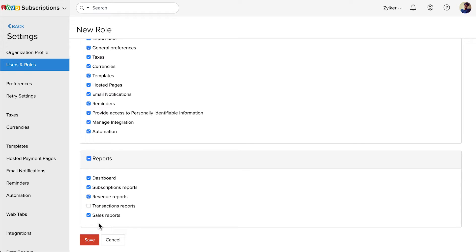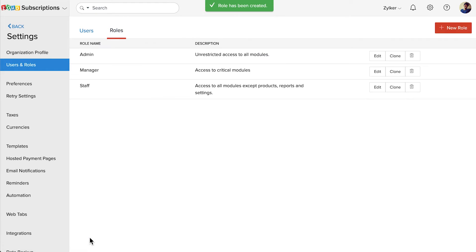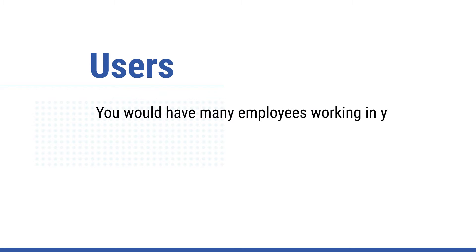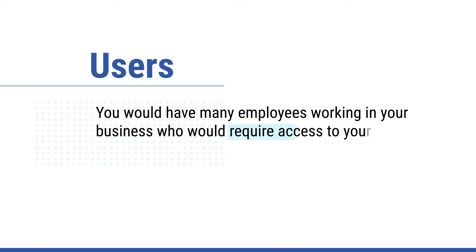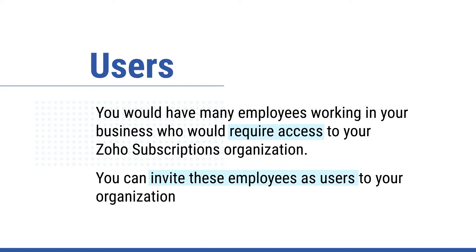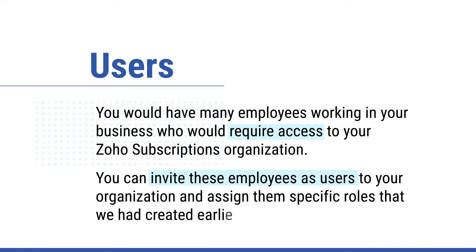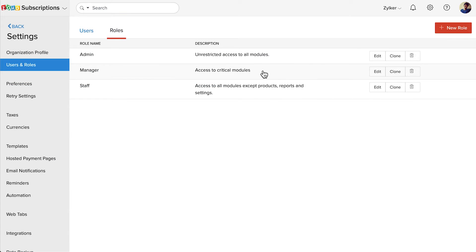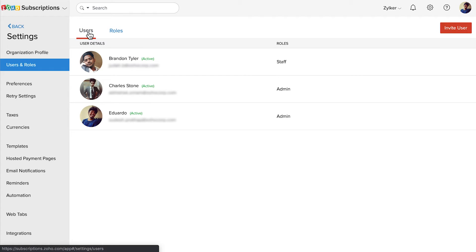After you have selected all the permissions for your role, click Save. Your new role will be listed on this page. Now let's talk about users. You would have many employees working in your business who would require access to your Zoho Subscriptions organization. To view all the users in your organization, click the Users tab at the top of the page.